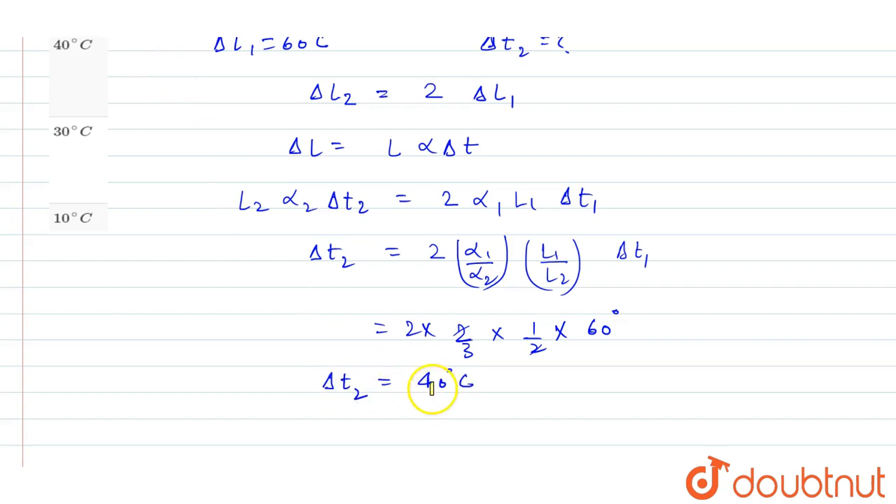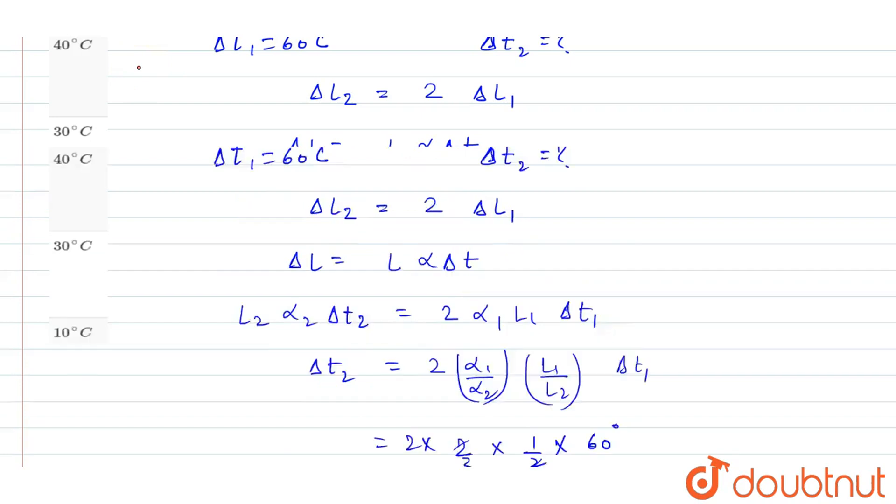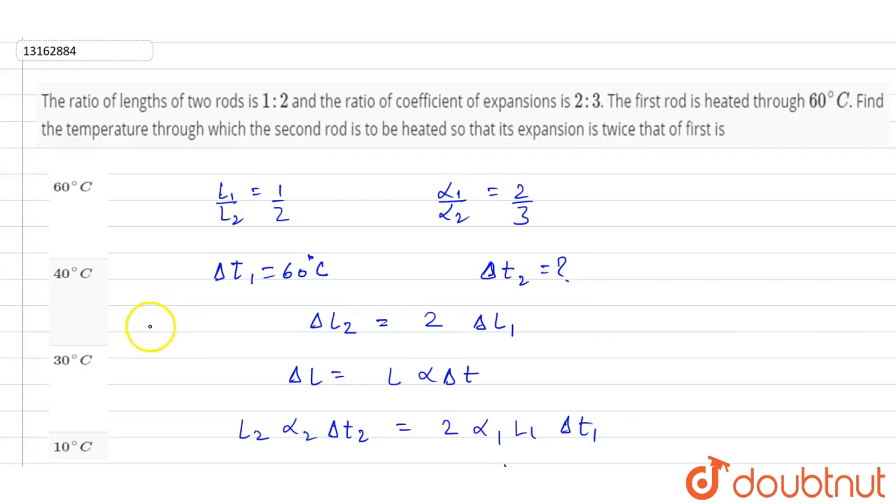It should be heated through 40 degree Celsius so that the expansion will be twice that of the rod one. So 40 is option B. So option B will be the correct option here.